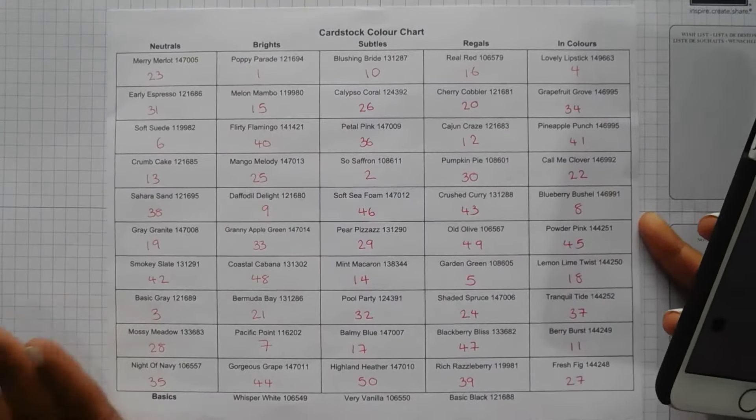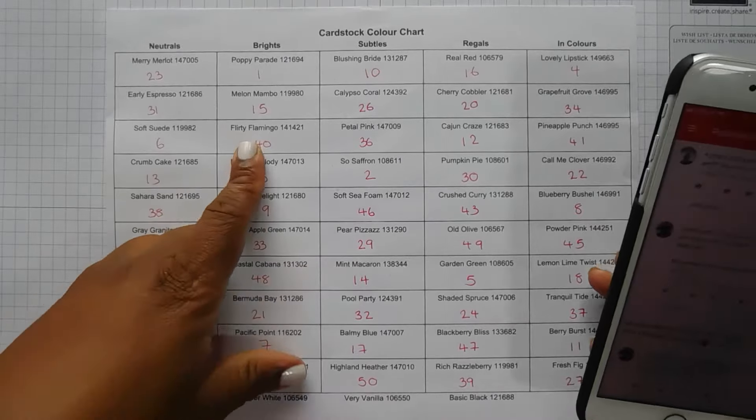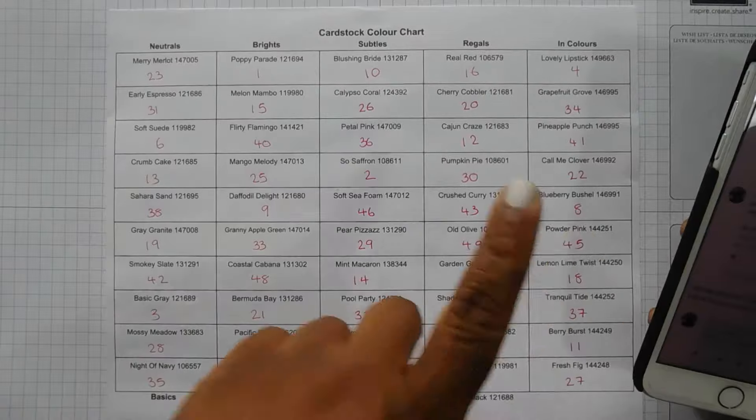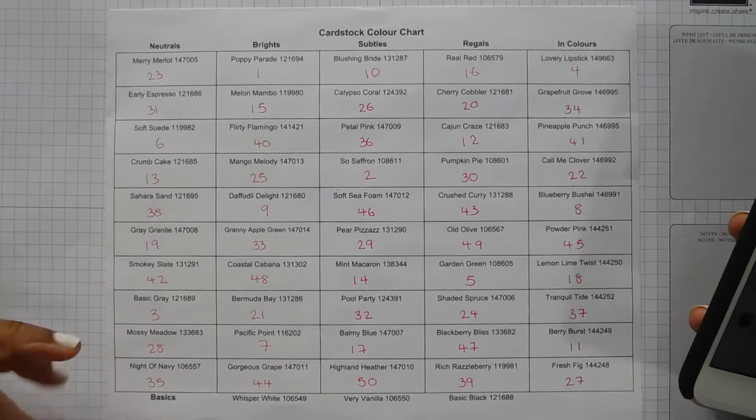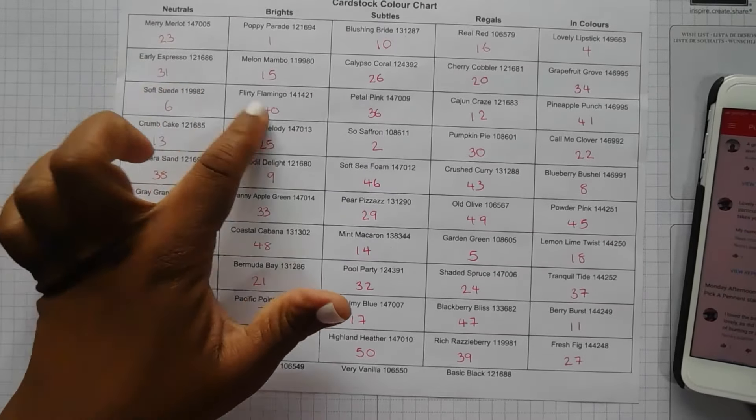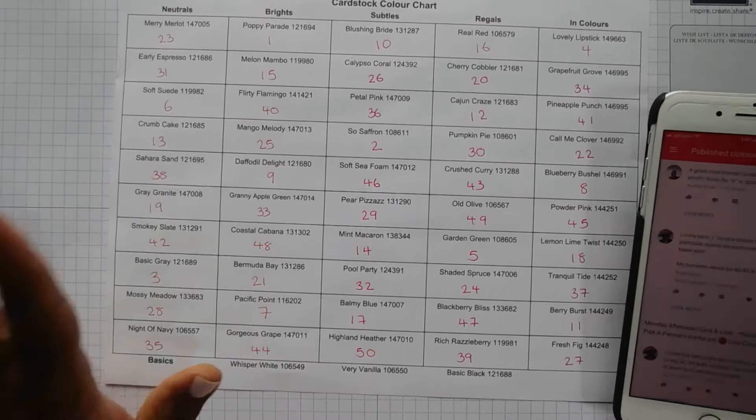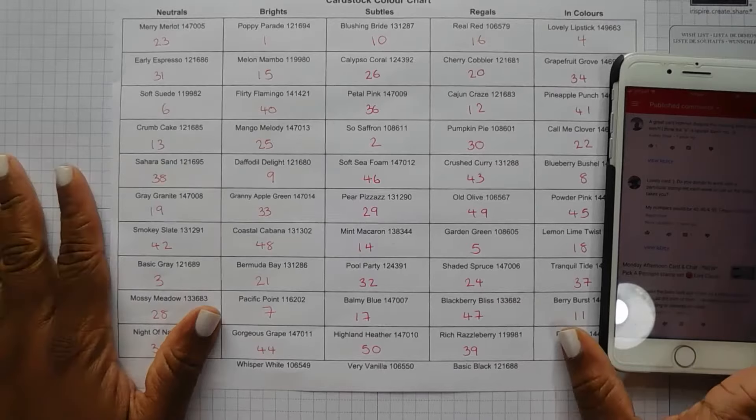So that gives us number 40 which is Flirty Flamingo, 45 is Powder Pink, and number 50 is Highland Heather. So we've got Flirty Flamingo, Powder Pink and Highland Heather. I'll go and grab those colours and then we can make a start on this card.